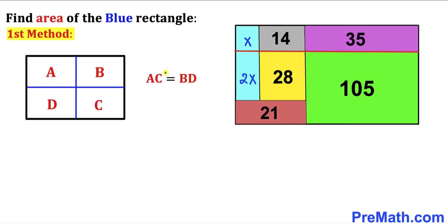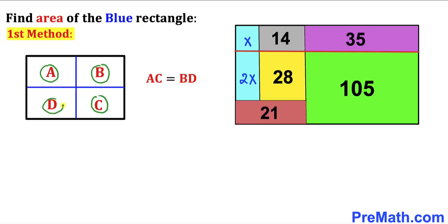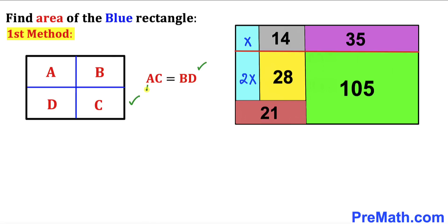Now let me go over another crucial concept. If we have a bigger rectangle consisting of four smaller rectangles inside it, where A, B, C, and D are the areas of each rectangle, then the product of their diagonal rectangle areas is going to be the same — that is, A times C equals B times D. If you are not sure about this equation, let me show you a quick proof.